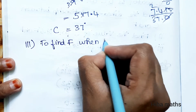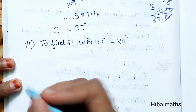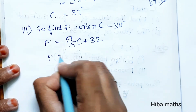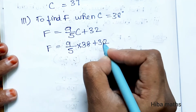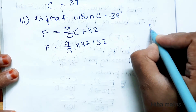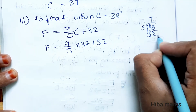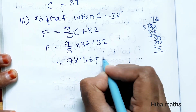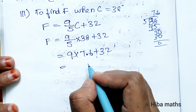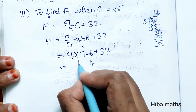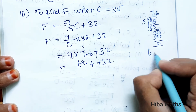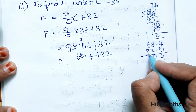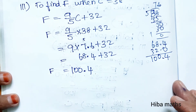Third part: to find F when C is equal to 38 degree Celsius. From the equation, F = 9/5 × C + 32. Substituting C = 38: F = 9/5 × 38 + 32. Now 38 divided by 5 is 7.6, so F = 9 × 7.6 + 32 = 68.4 + 32 = 100.4. Therefore F is equal to 100.4 degree Fahrenheit.